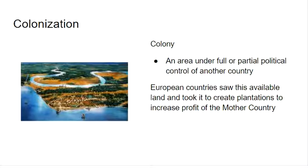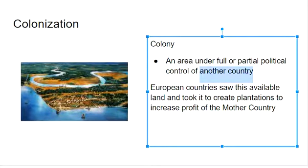Now, in order to get these plantations, the European country is going to colonize — they're going to set up a colony. A colony is an area under full or partial political control of another country. The other country is going to be European countries such as the French, Spanish, British, Portuguese, and Dutch. They're going to set up these colonies, and for right now we're going to focus mainly on the Americas. These European countries saw this available land and took it to create plantations, to grow cash crops in order to sell in Europe for a profit. The mother country is the European country — the country that is in control.